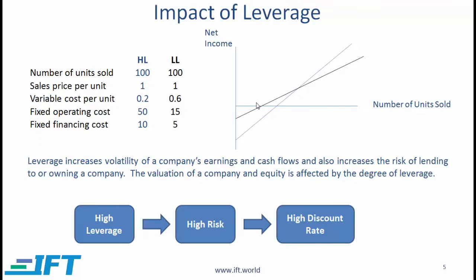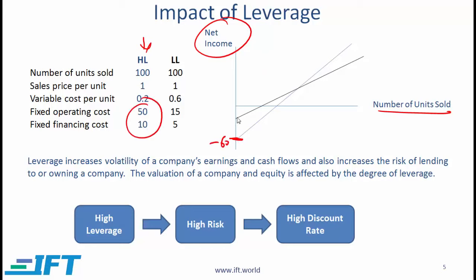Here is roughly what you should come up with. This blue line represents the net income for different numbers of units sold for the high leverage company. The intercept is minus 60 because at zero sales, net income is minus 60 due to the fixed costs. As sales increase, the net income increases at a relatively high rate. The black line represents the low leverage firm — if there are no sales, the loss is only 20, and as sales increase, net income increases but at a lower rate.